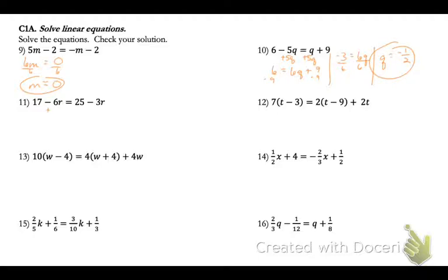On number 11, kind of the same thing, combine your r's. So I'm going to add my 6r to both sides, and then subtract my 25. So negative 8 equals 3r, so r will equal 8 thirds. And just leave that as an improper fraction. There's no need to write it as a mixed number.